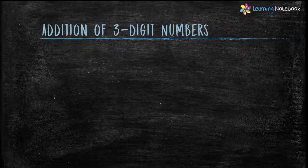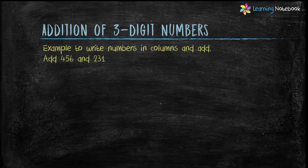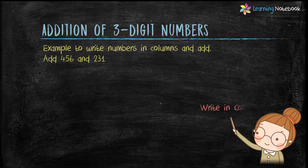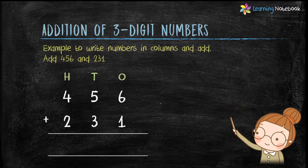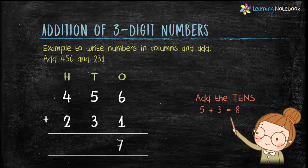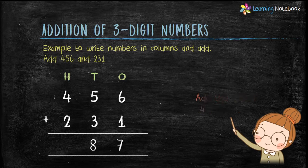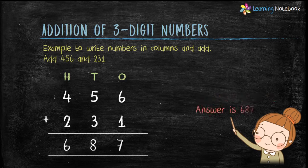Let's learn the addition of 3-digit numbers. The example is: add 456 and 231. We will first write the numbers in column form as displayed. Now add the digits at the ones place: 6 plus 1 equals 7. Moving to the tens place: 5 plus 3 equals 8. Then the hundreds place: 4 plus 2 equals 6. So our answer is 687.